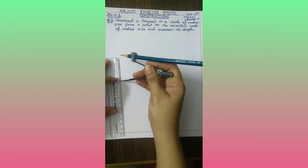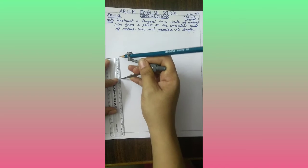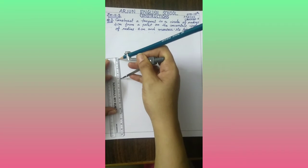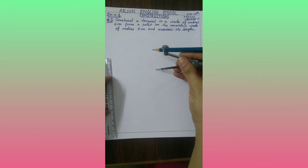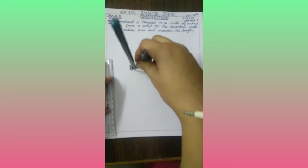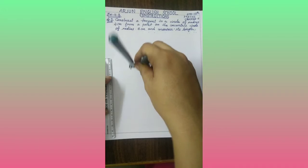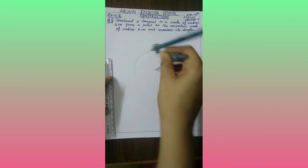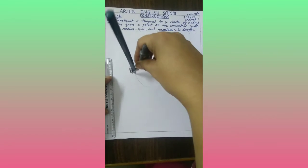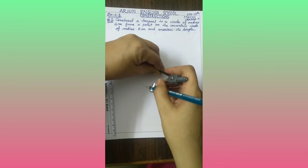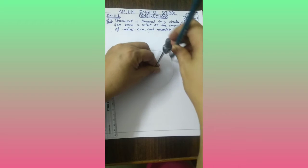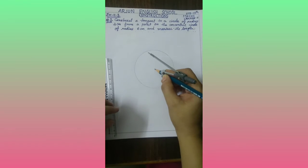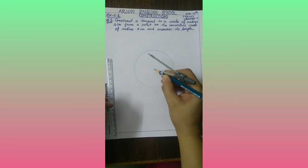First we will draw of 4 cm. Here I am taking 4 cm in my rounder. Now I will draw one circle of 4 cm. You also start construction and draw one 4 cm circle with center O.